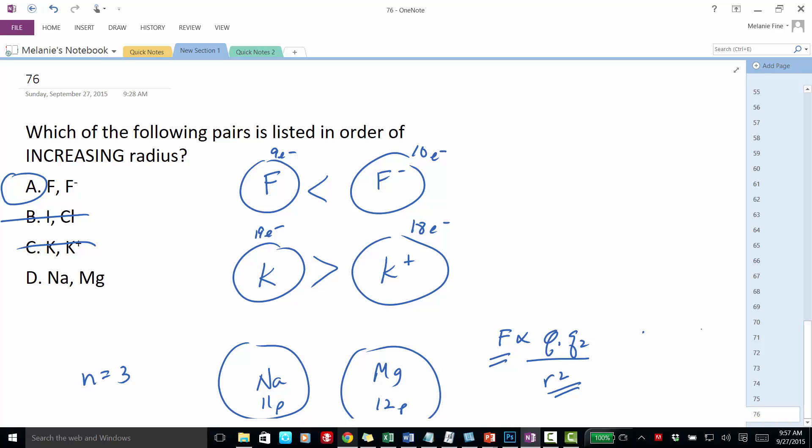So the one of these with the largest radius is going to be the one with the fewest number of protons. So sodium is going to be larger than magnesium, so that is also not going to count. So the correct answer is A. We know that the fluoride ion is going to have a greater radius than the fluorine atom.